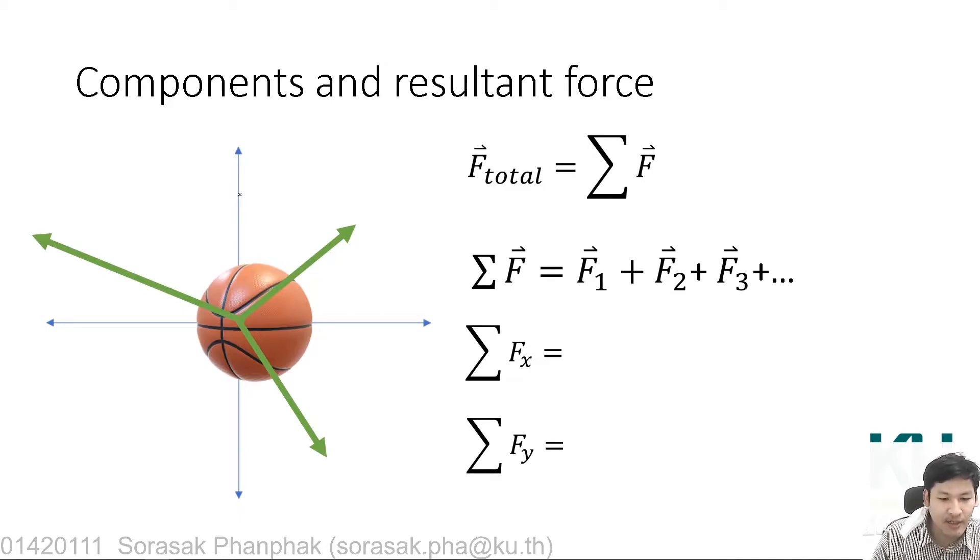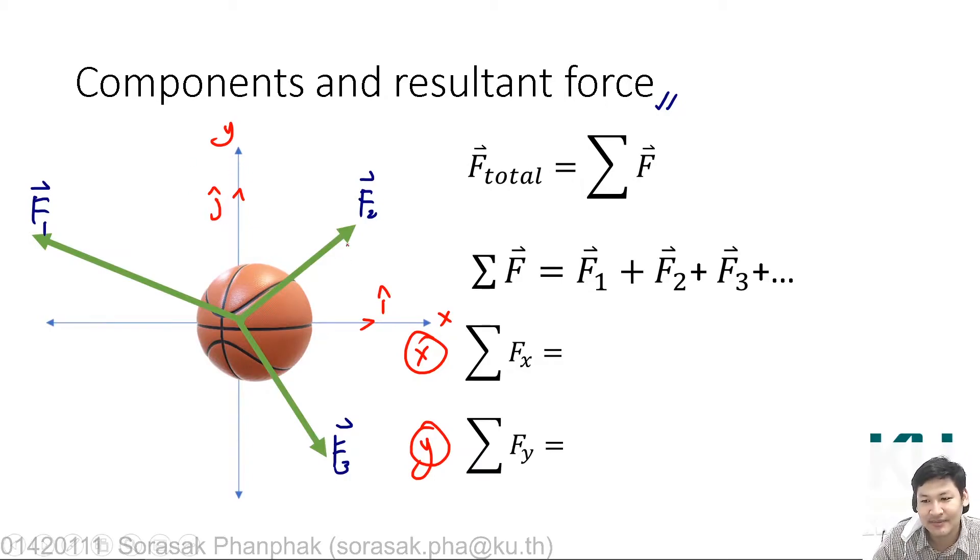Let's look at vector components and resultant force. As you've learned about vectors, if you have vectors with different directions and you'd like to sum them up, you can break them into components. This is an example. If you have force in this direction as F1, this direction as F2, and this direction as F3, all pulling on this basketball object, how can you sum for the resultant force? You break them into X and Y components. This is the easiest way to sum all these values as scalars, then put the direction using unit vectors i for X direction and j for Y direction.